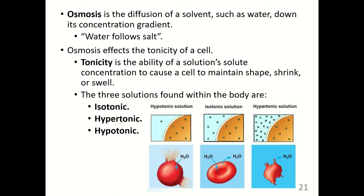Osmosis affects the tonicity of a cell — the ability of a solution's solute concentration to cause a cell to maintain shape, shrink, or swell. The three solutions found within the body are isotonic, hypertonic, or hypotonic. In an isotonic solution, 'iso' means equal; there are equal concentrations of solutes inside and outside the cell membrane, which maintains the cell's shape. In a hypertonic solution, there are more solutes outside the cell than inside, so water leaves the cell to dilute the outside concentration, causing the cell to shrink.